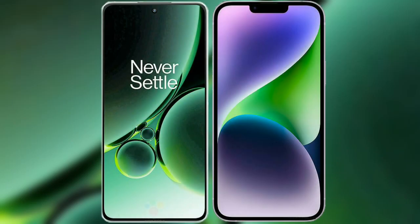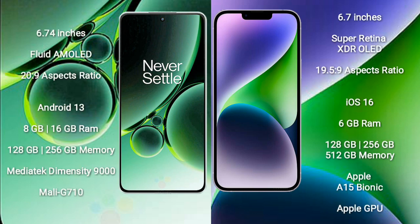I will compare the new OnePlus Nord 3 with iPhone 14 Plus. OnePlus Nord 3 comes with a 6.74-inch flat AMOLED display, while iPhone 14 Plus comes with a 6.7-inch Super Retina XDR OLED display. OnePlus Nord 3 runs on Android 13, and iPhone 14 Plus runs on iOS 16.